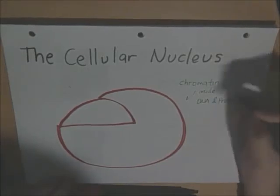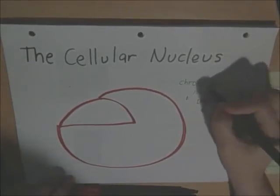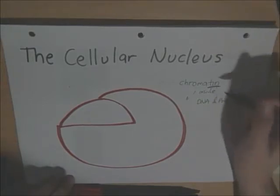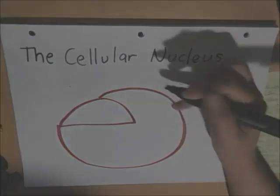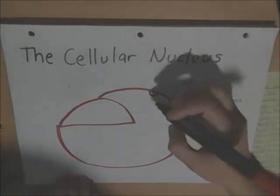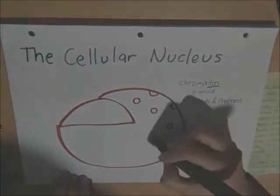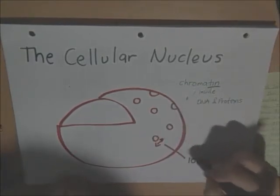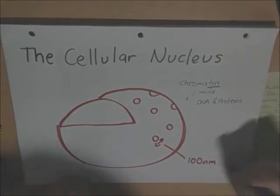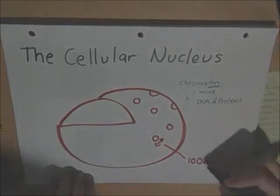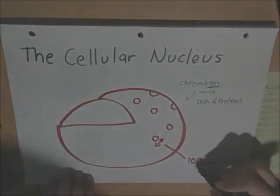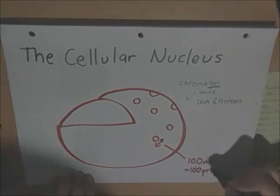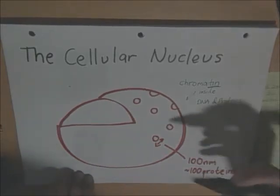So, chromatin is the stuff that's inside and it consists of DNA and proteins. And it's very important to remember the tin because you'll be confused when we go on to chromatid later.